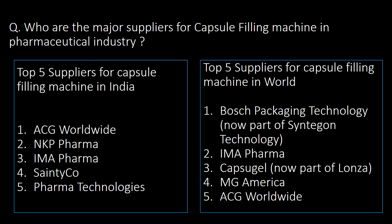Who are the major suppliers for capsule filling machines in the pharmaceutical industry? The top five suppliers for capsule filling machines in India are SCG Worldwide, NKP Pharma, Ema Pharma, Centico, and Pharma Technologies. Whereas the top five suppliers for capsule filling machines worldwide are Bosch, Ema, CapsuGel, MG America, and SCG Worldwide.